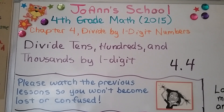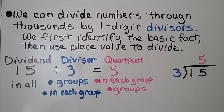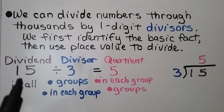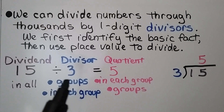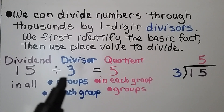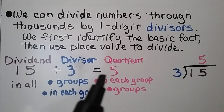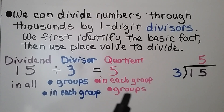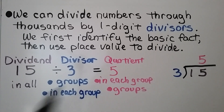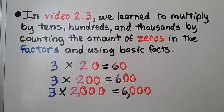Lesson 4.4: Divide Tens, Hundreds, and Thousands by One Digit. We can divide numbers through thousands by one-digit divisors. We first identify the basic fact, then use place value to divide. The dividend is how many in all, and the divisor tells us how many groups we have, or how many are in each group. Our answer is the quotient. These roles can change places depending on what they represent.